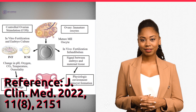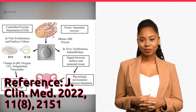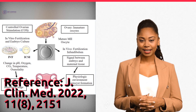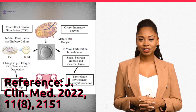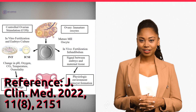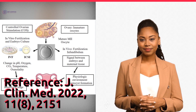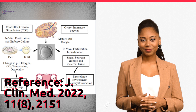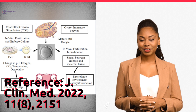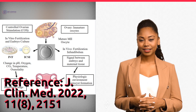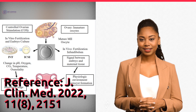The optimal pH range for embryo development is between 7.2 and 7.4, which is slightly alkaline. Changes in pH can affect cellular processes such as enzyme activity and cell division, which can lead to abnormal development, reduced implantation, and lower pregnancy rates.